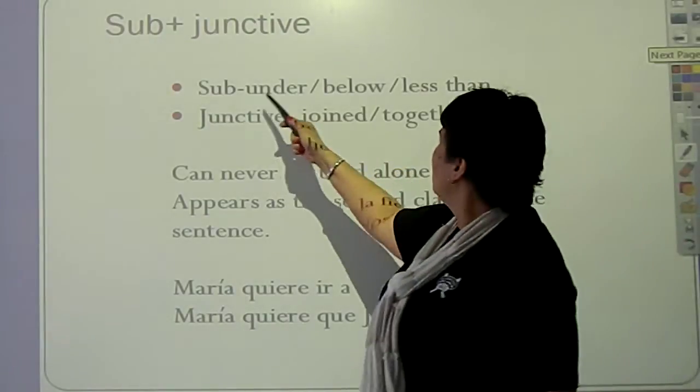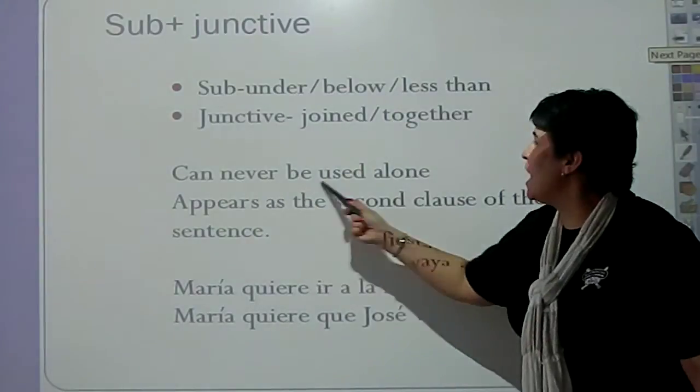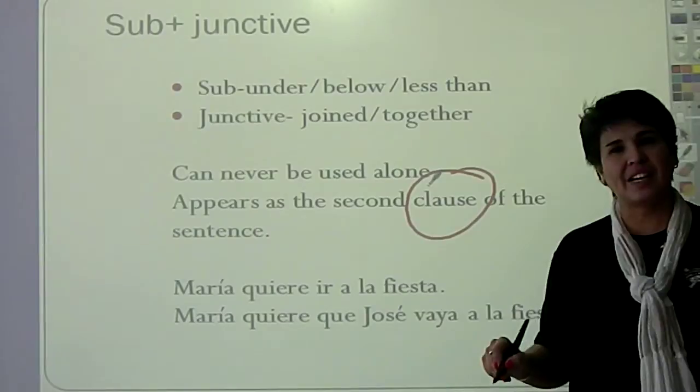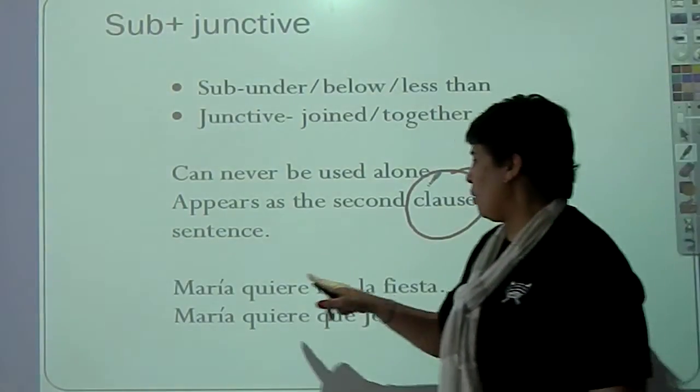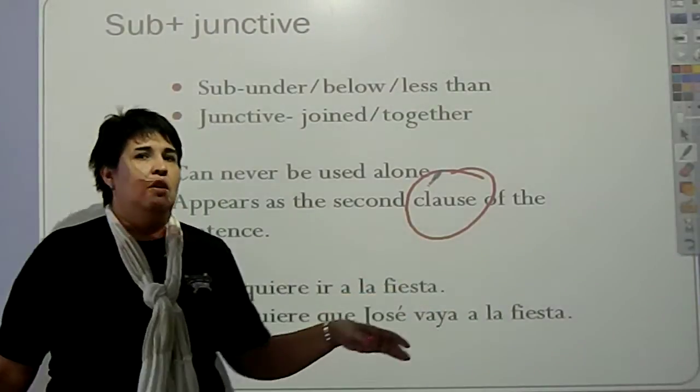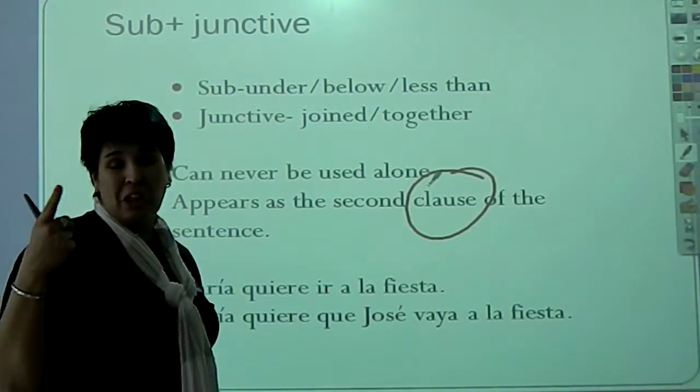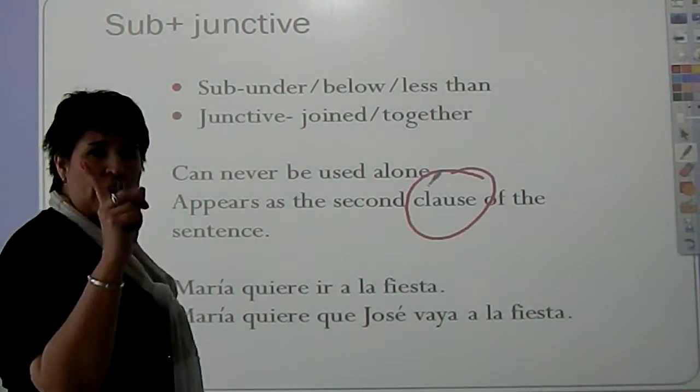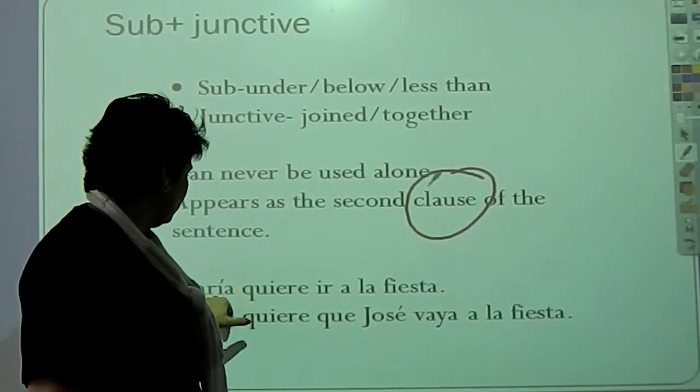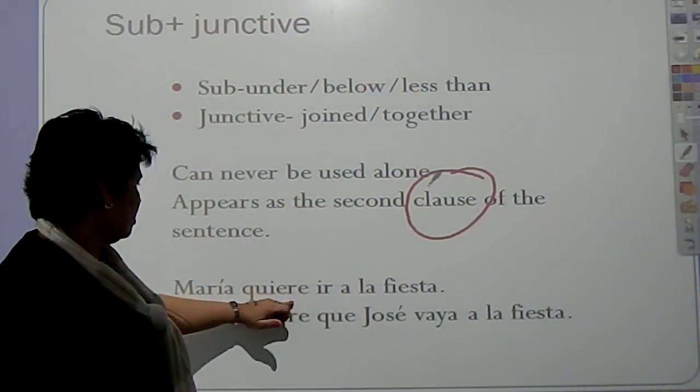So sub means under, below, less than, junctive, joined together. It can never be used alone. It appears as the second clause of the sentence. For example, Maria wants to go to the party. There's no subjunctive there, because there's only one clause. Only one clause. What determines a clause? A clause is determined by the subject and a verb. There's only one subject. There's only one verb.